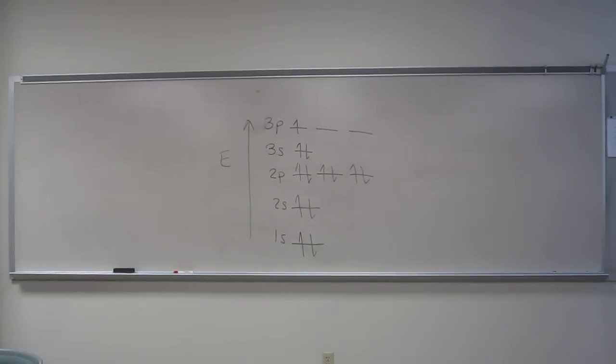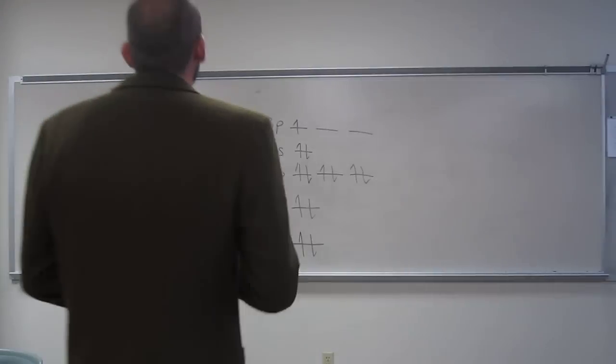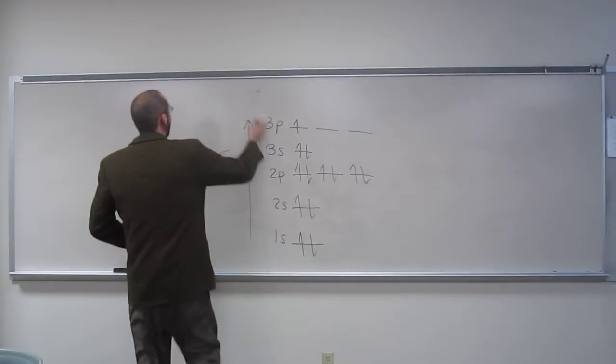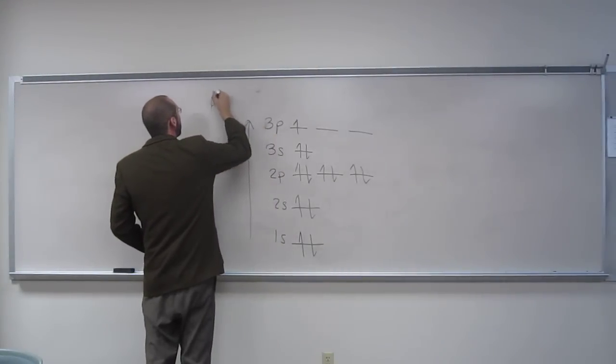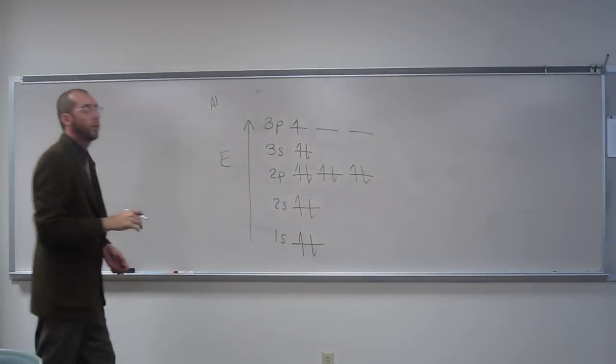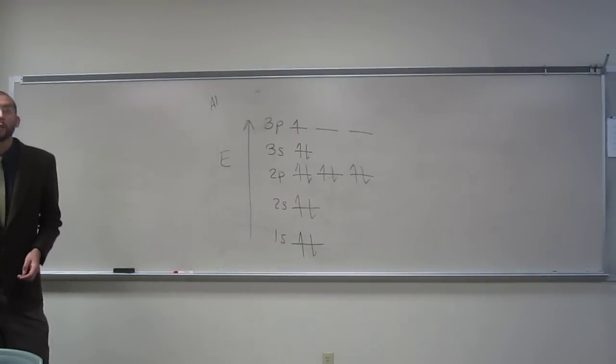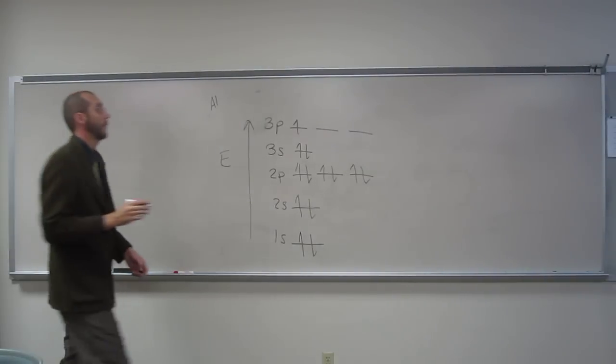This problem asks us to identify the 7th and 13th electrons of aluminum, and we wrote out the orbital diagram already, using only the quantum numbers, so the 7th and the 13th electron.